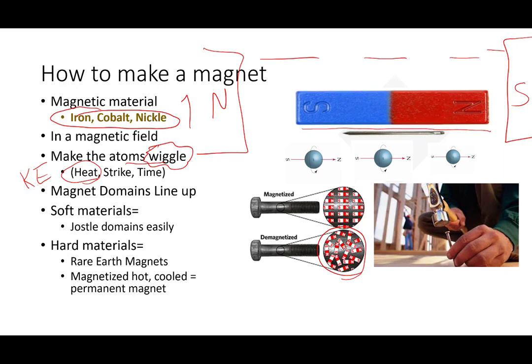When they wiggle, they're going to go, oh look, we're in a magnetic field. They're all going to line up north to south. And then when they cool, they're going to cool in the correct alignment.